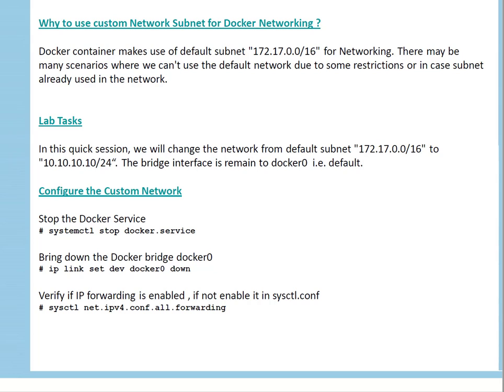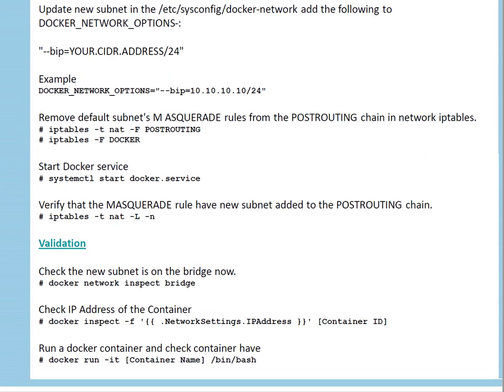Then we will verify whether IP forwarding is enabled or not, and if it is not enabled, we are going to enable it in sysctl.conf. We need IP forwarding because if we want to communicate with an outside network, IP forwarding must be enabled. Then, the way to specify the custom network subnet is through the file /etc/sysconfig/docker-network.